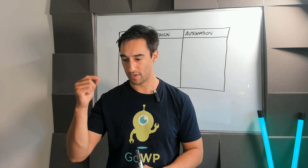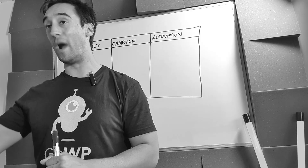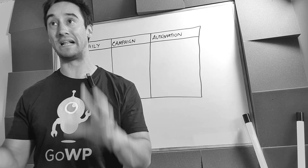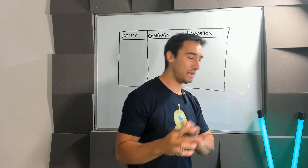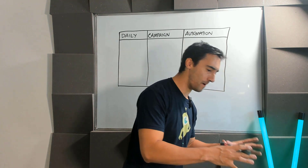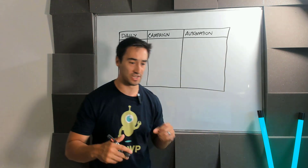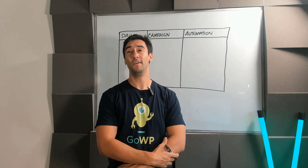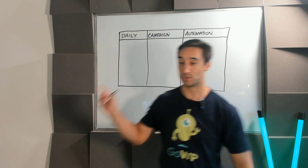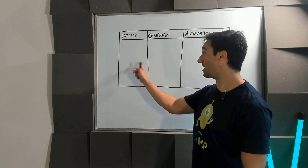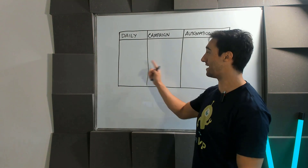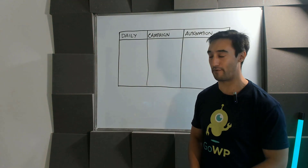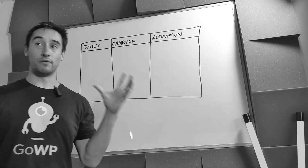I want to show you how to get way more out of your email list even with a small list, just with a little planning. I think people don't do email marketing strategy because they've got no idea where to start — there are billions of different types of emails. So I've broken it down into three really simple areas.